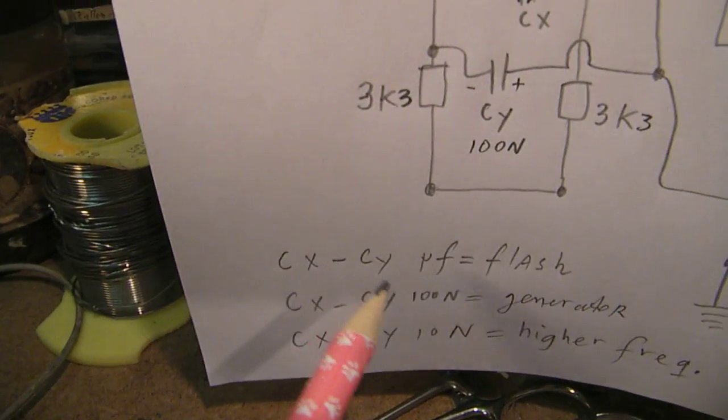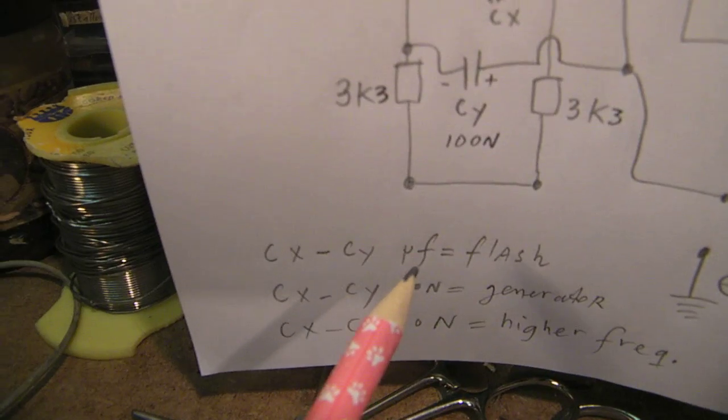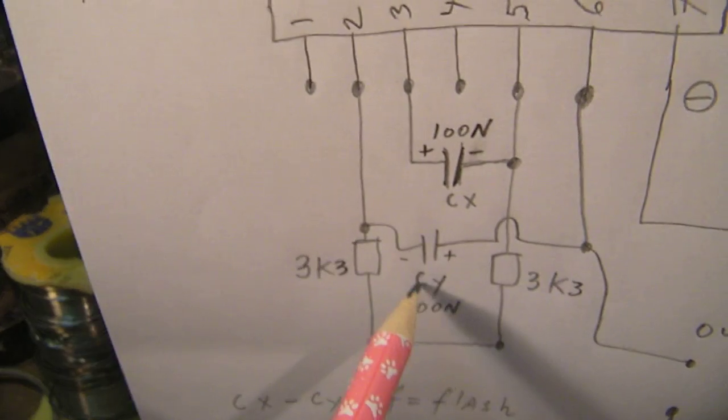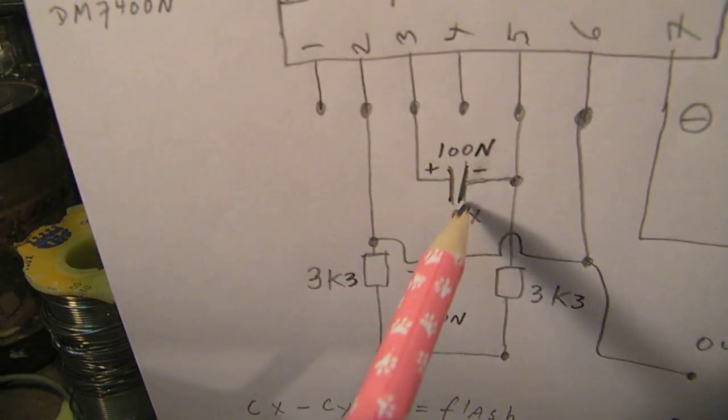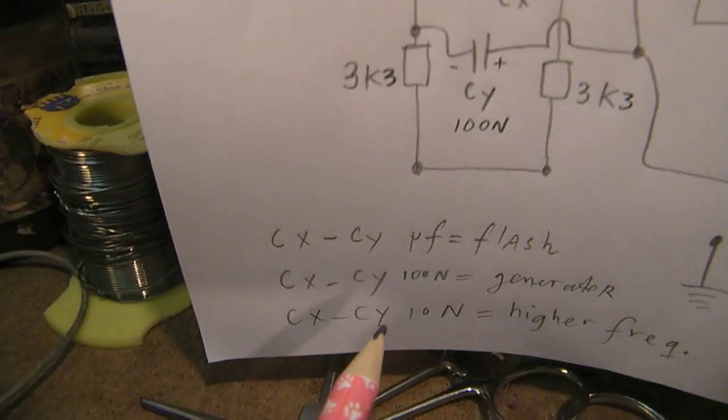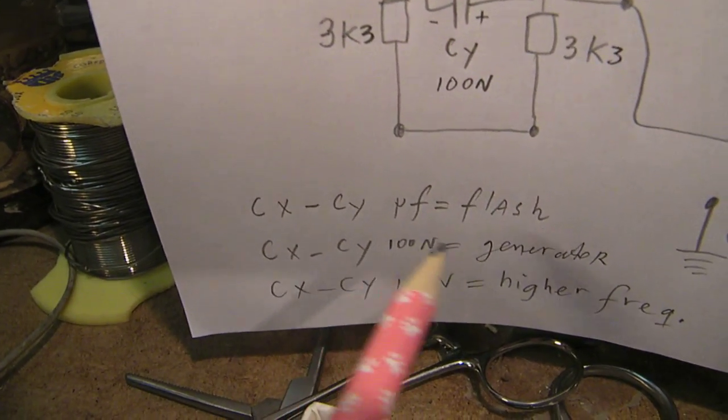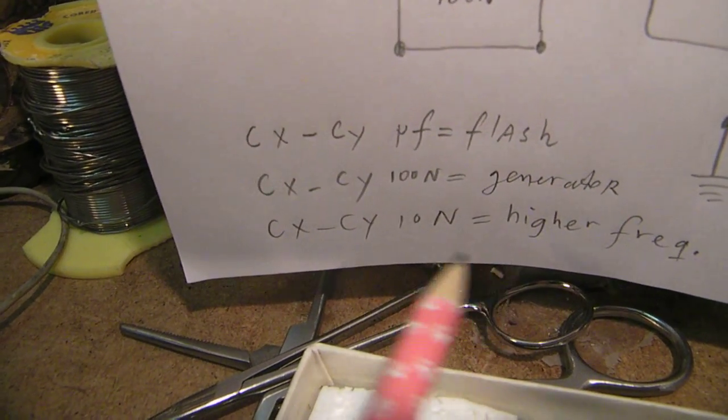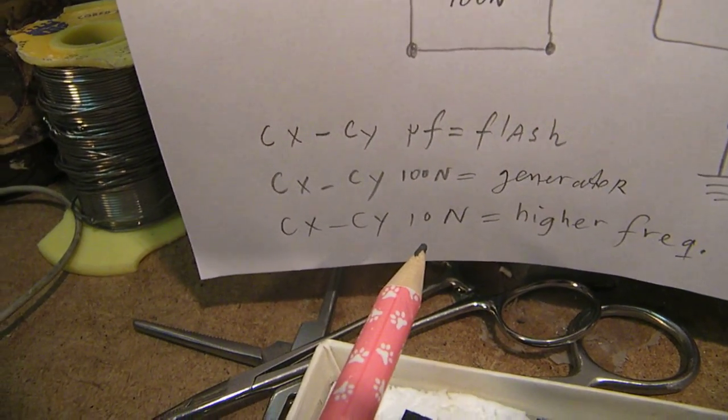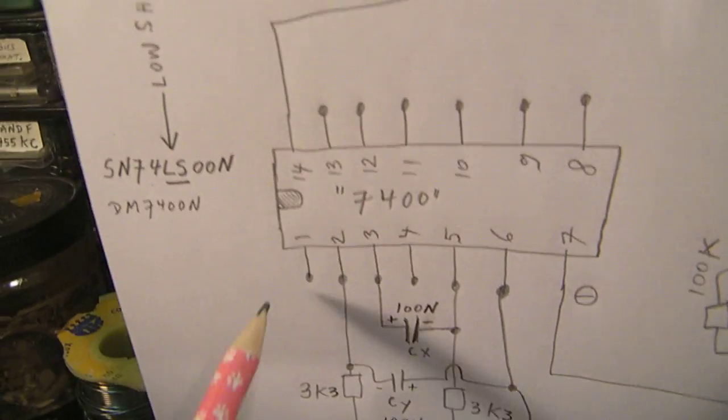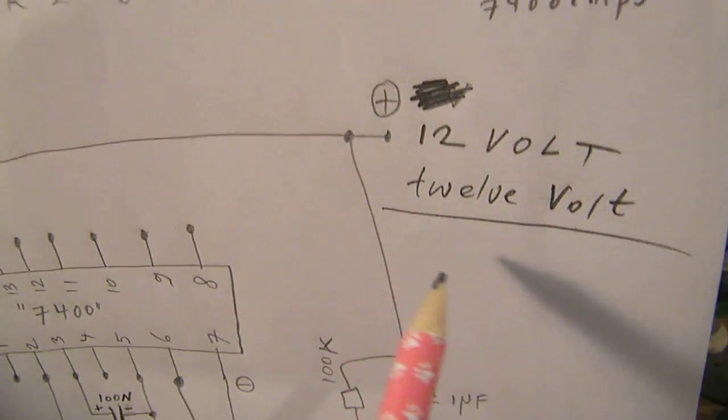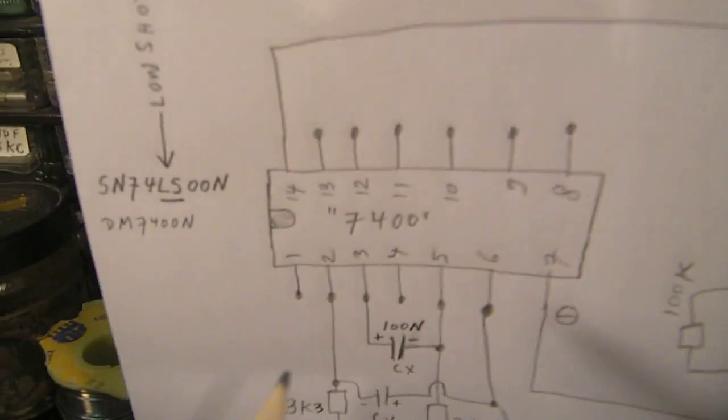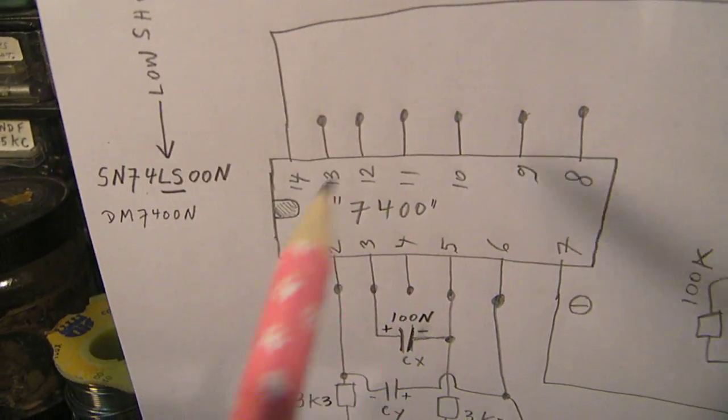When you want to go to low frequencies, say 100 hertz or so, you can use electrolytics. And here is the indication from the polarity from electrolytics. Higher frequencies, 100 nanofarad. Much higher frequencies, 10 nanofarad or 10,000 picofarad. And it's very important to say that I use here 12 volts instead of 5 volts. With 5 volts the chip often did not want to start.